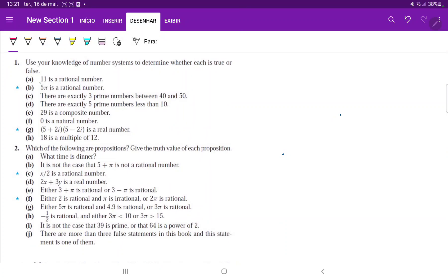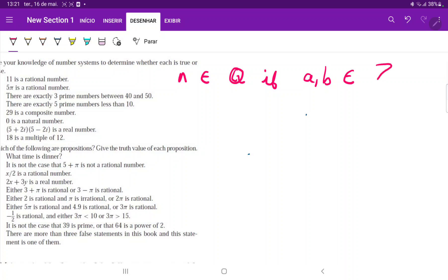So for A, 11 is a rational number. We have to remember the definition of a rational number. So N belongs to the set of rational numbers if there exists integers A, B, so A, B belonging to the set of integers, such that N is equal to A over B.